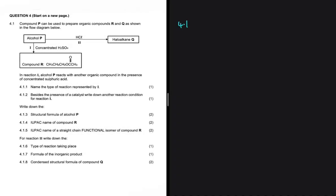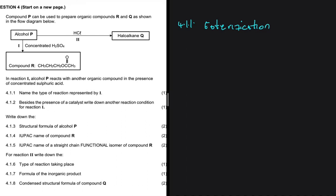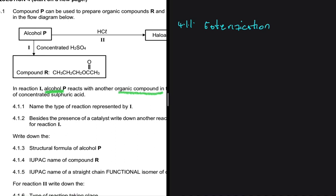For 4.1.1, name the type of reaction represented by Roman numeral one. That is esterification. We are told that in reaction one, alcohol P reacts with another organic compound in the presence of concentrated sulfuric acid. The result is compound R. If you look at compound R, you will realize by the functional group that compound R is an ester, so reaction one is esterification.